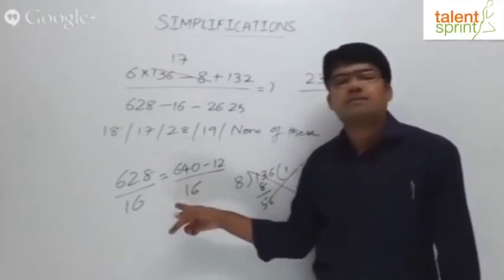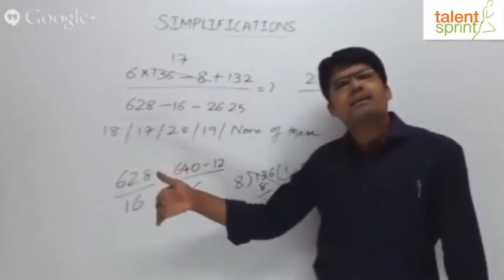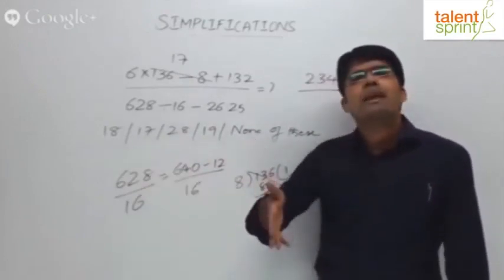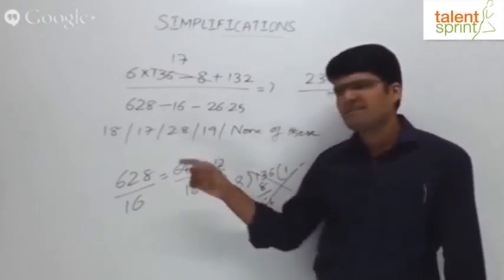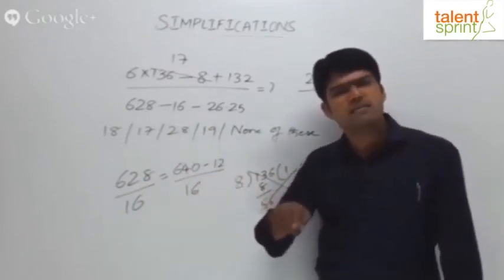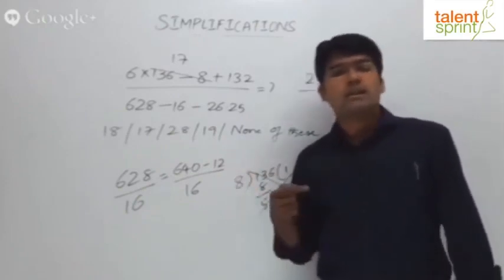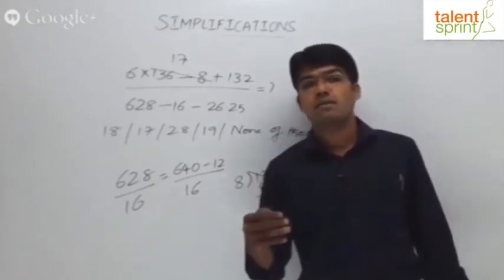I would say even these steps are not required. The other way of doing it is to break 628 in terms of some other multiple of 16. For example, it can also be taken as 480 plus 148. Why 480 plus 148? Because 480 is divisible by 16. 480 by 16 is 30. 148 is left out.